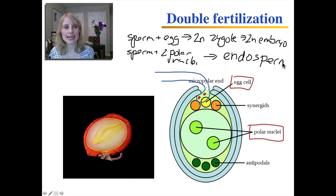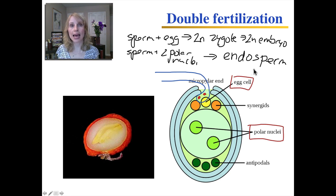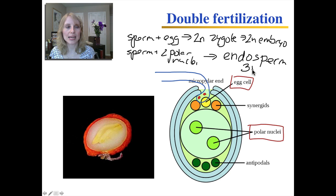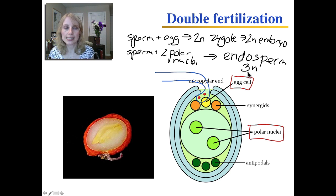Now, how many sets of chromosomes does the endosperm have? There are three nuclei fusing together, which means the endosperm is triploid — it has three sets of chromosomes.